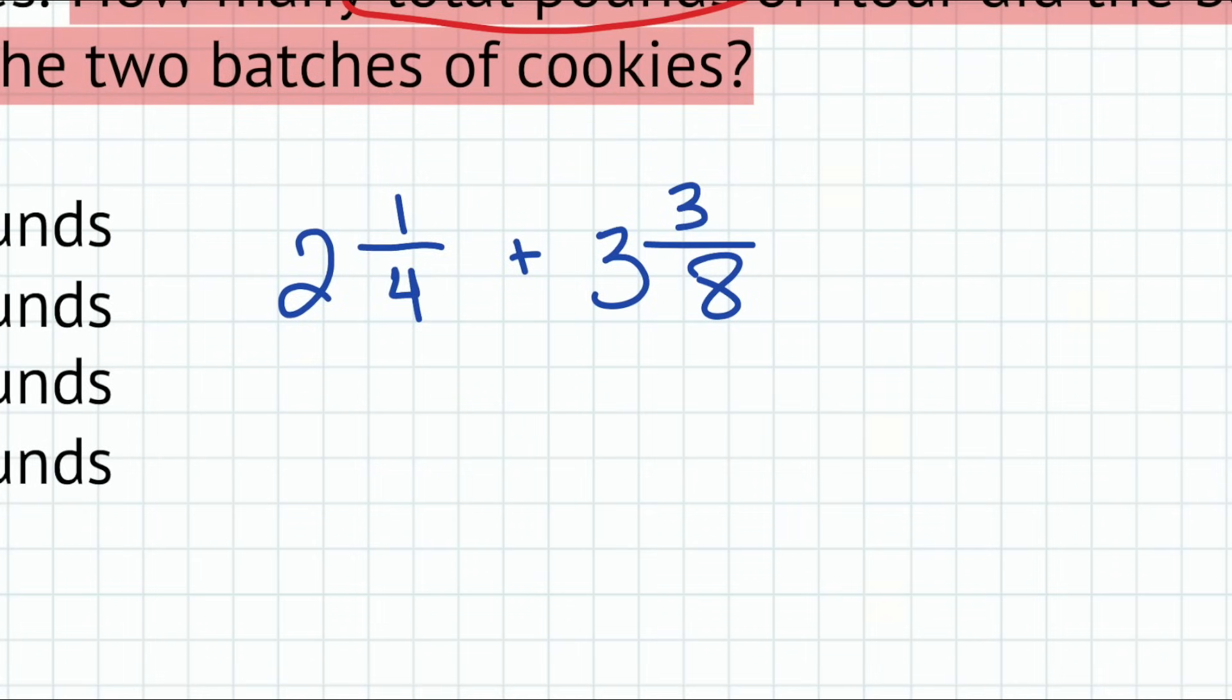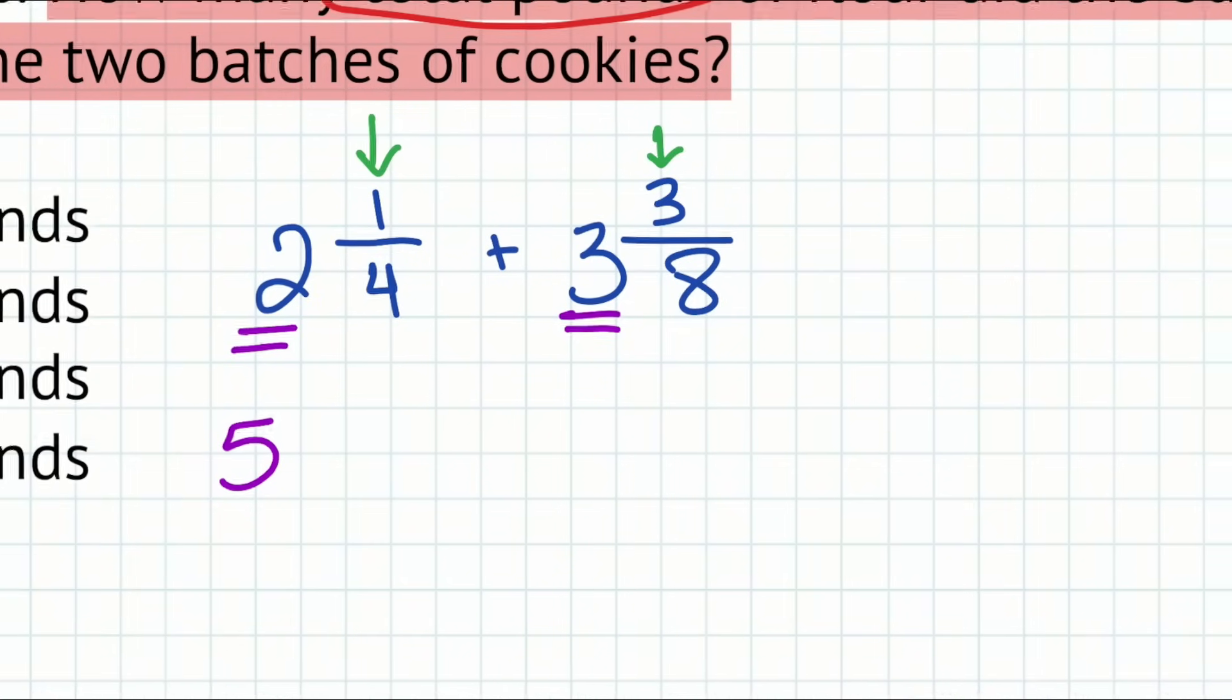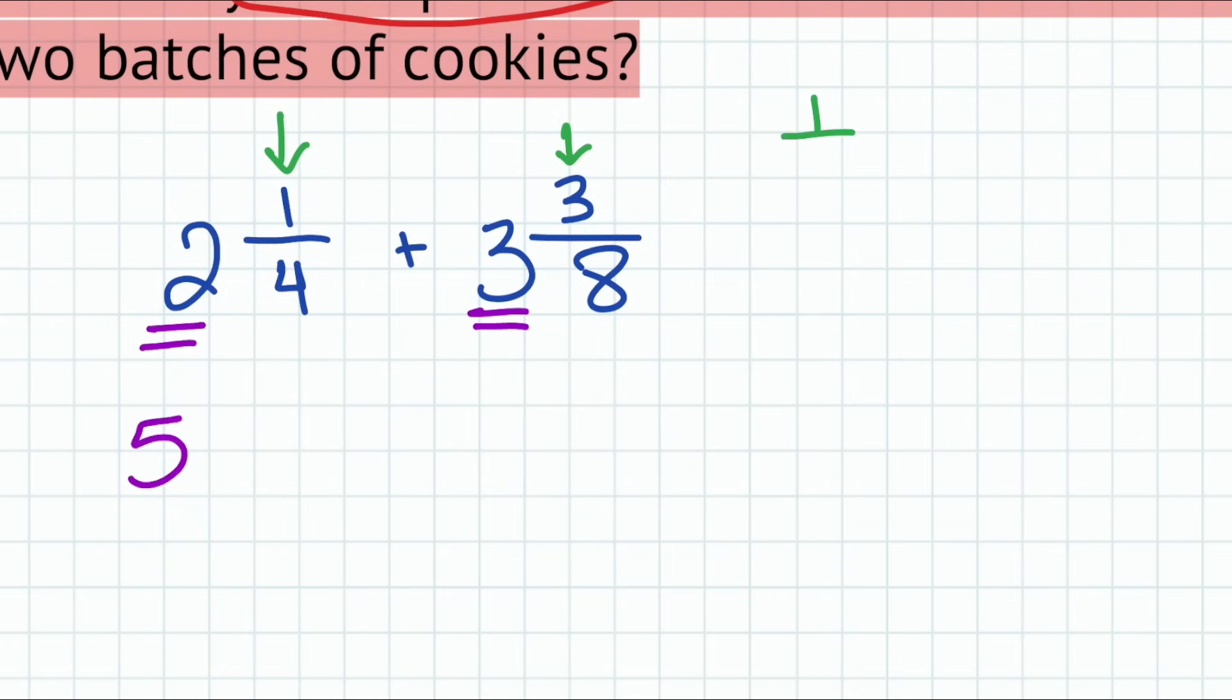So two and a quarter, and we'll add that with three and three eighths. This is going to be the math that we're doing. That's going to give us the total pounds of flour. So already I can see that we have two and three, that's going to be five. So I'm just going to say five so far. And then we'll go ahead and work with this on the side, the one quarter and the three eighths.